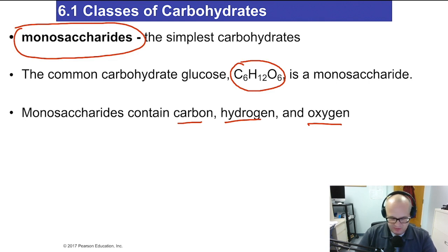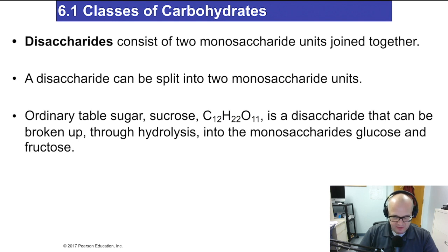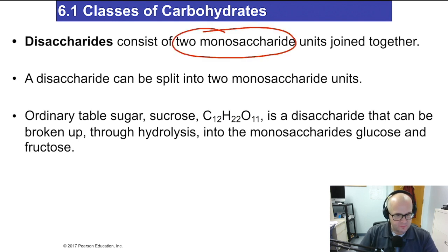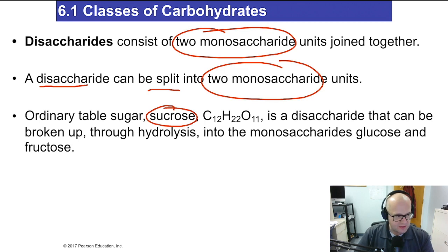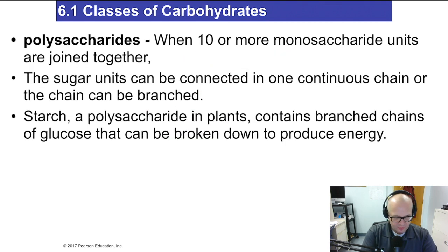Disaccharides consist of two monosaccharides joined together. A disaccharide can be split into two monosaccharides. For example, sucrose — like table sugar — can be split into the monomers glucose and fructose.